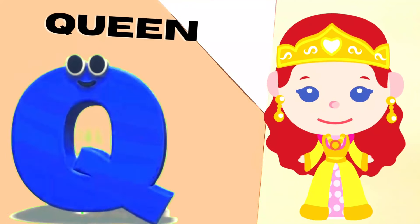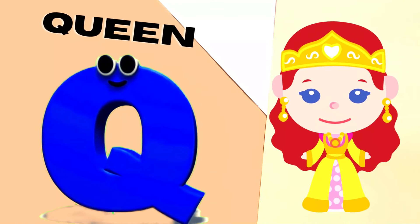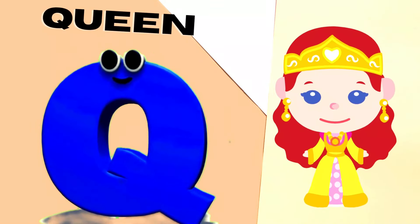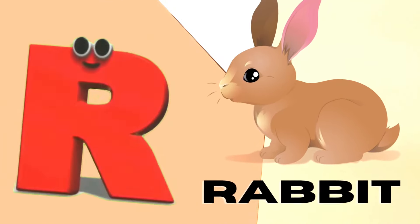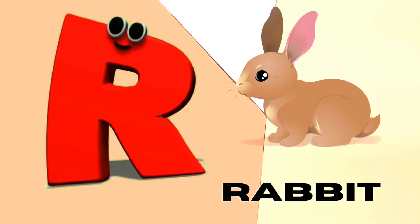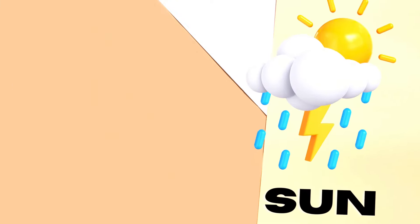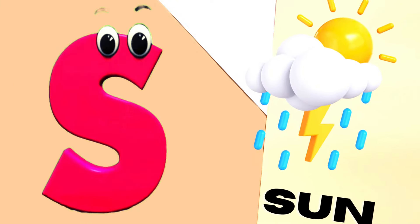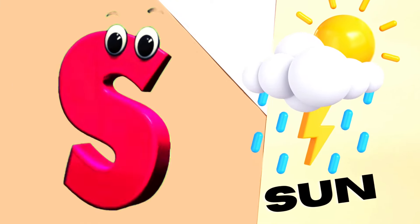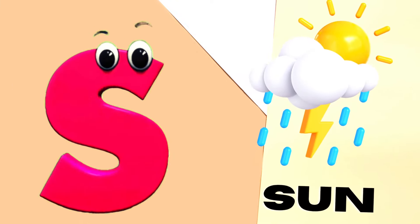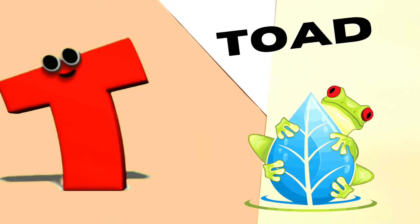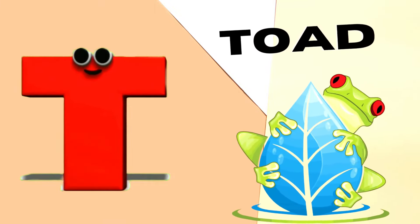Q is for Queen, Q-Q-Queen. R is for Rabbit, R-R-R-Rabbit. S is for Sun, S-S-Sun. T is for Toad, T-T-Toad.